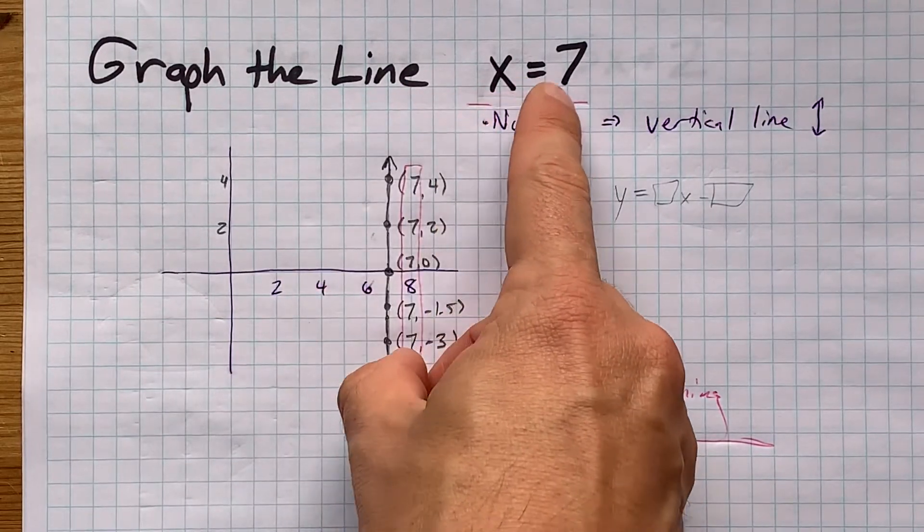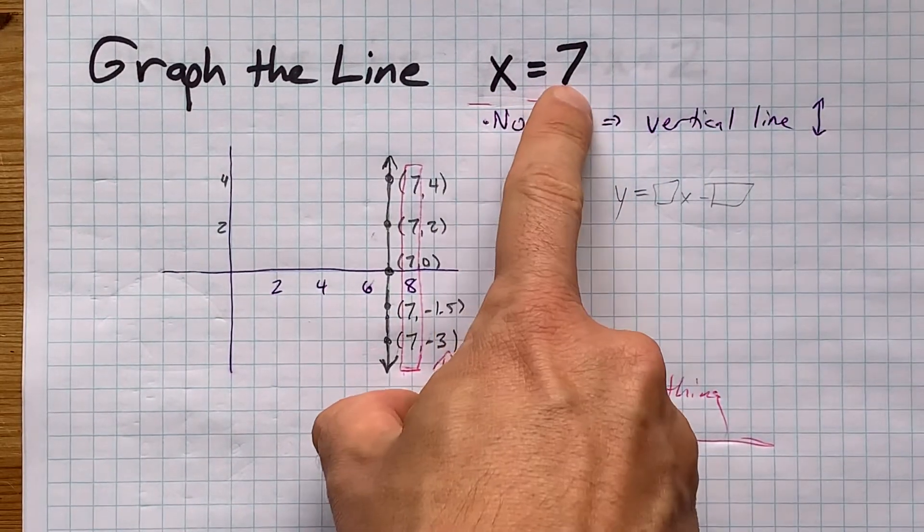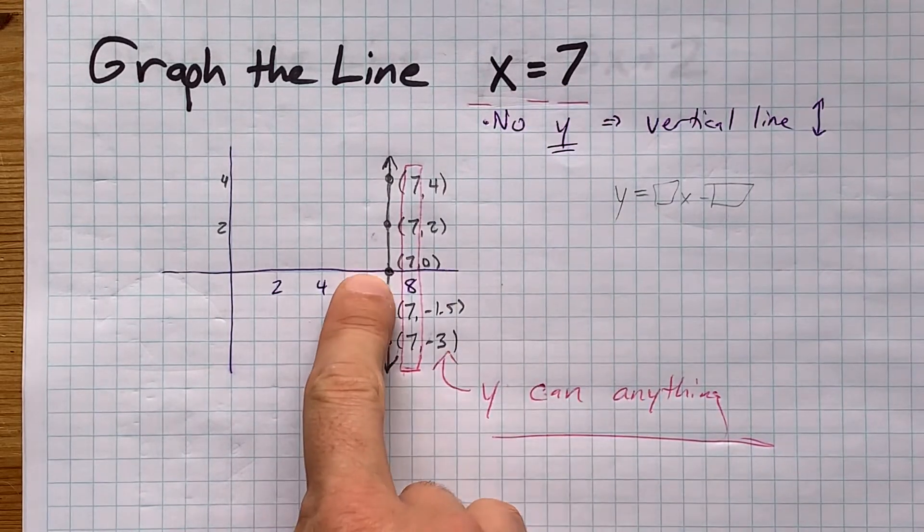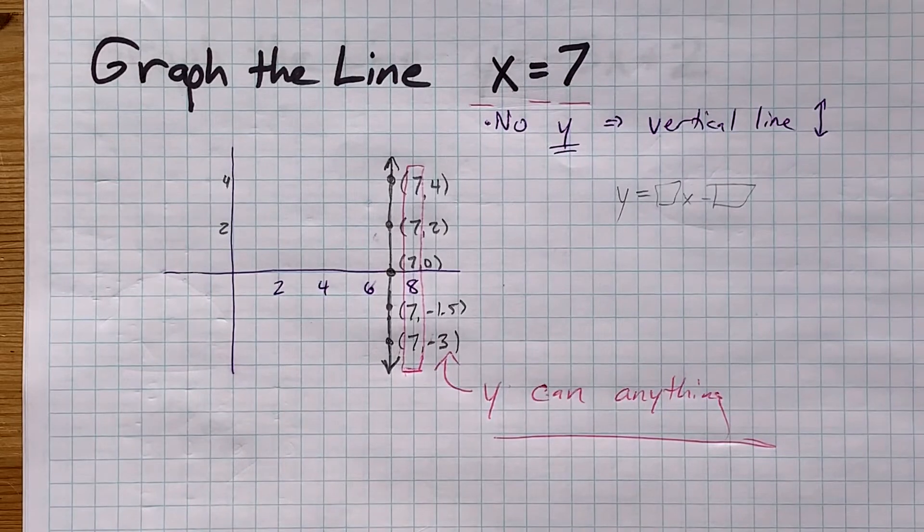A line x equals some whole number is always going to be a vertical line, and it's going to pass through the x-axis at that number, just like this one did. Thanks for graphing with me, and best of luck.